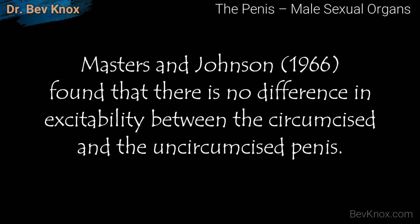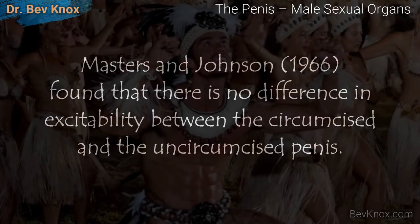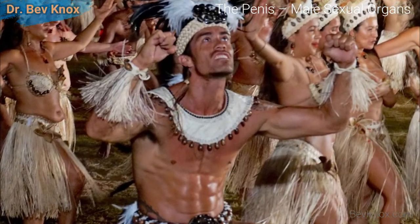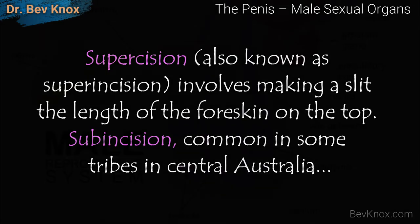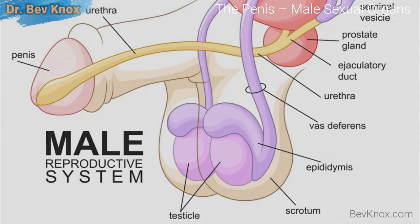Masters and Johnson in 1966 found that there is really no difference in excitability between the circumcised and the uncircumcised penis. A common form across most of Polynesia is superscision, also known as superincision, which involves making a slit the length of the foreskin on top, with the foreskin otherwise remaining intact. With subincision, which is common in some tribes in Central Australia, a slit is made on the lower side of the penis along its entire length to the depth of the urethra. Urine is then excreted at the base rather than at the tip of the penis.